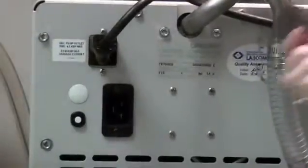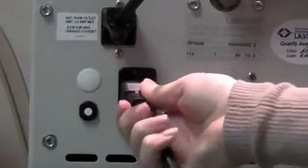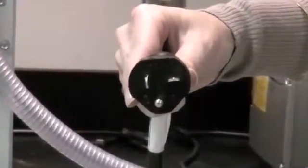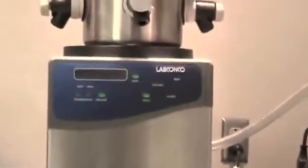Connect the freeze-dryer's power cord into the receptacle on the back of the freeze-dryer and insert the other end into a suitable wall receptacle. Your Freezone benchtop freeze-dryer system is now ready for use.